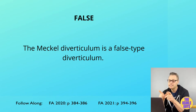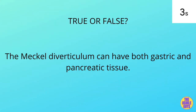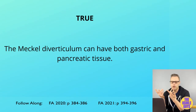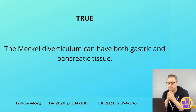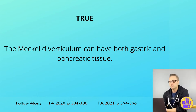Meckel's diverticulum is a true diverticulum — the statement calling it false is incorrect. It occurs due to persistence of the vitelline duct. It can contain both pancreatic and gastric tissue; the presence of gastric tissue is why we use the Technetium-99m pertechnetate scan, as it's taken up by heterotopic gastric mucosa. Meckel's diverticulum is most commonly seen in the first two years of life.